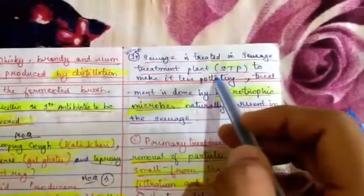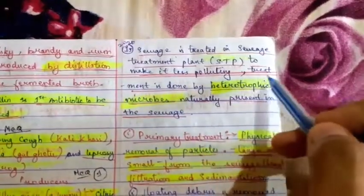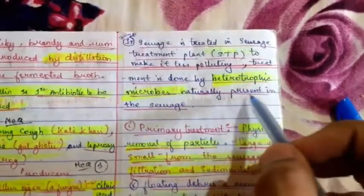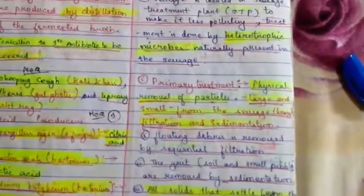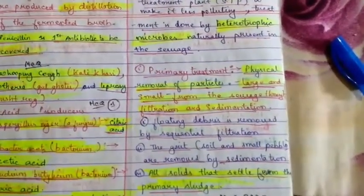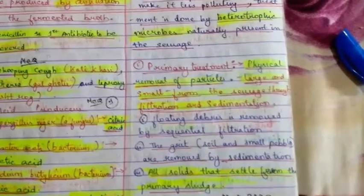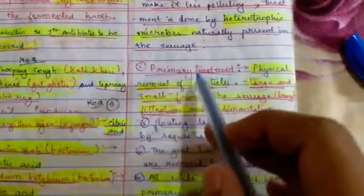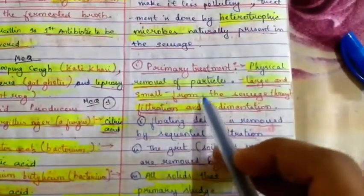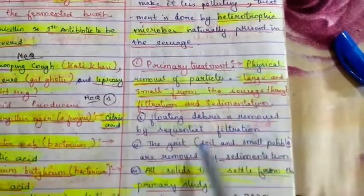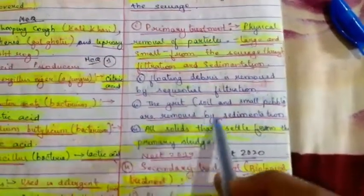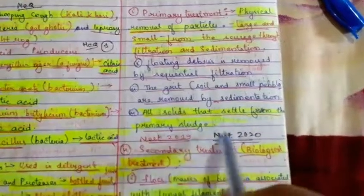Sewage is treated in a sewage treatment plant to make it less polluting. Treatment is done by heterotrophic microbes naturally present in the sewage. Primary treatment involves the physical removal of large and small particles from the sewage through filtration and sedimentation. Floating debris is removed by sequential filtration, and grit, soil, and small pebbles are removed by sedimentation. All solids that settle form the primary sludge.